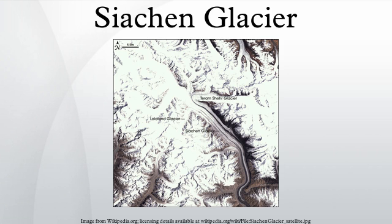Prior to 1984, neither country had any military forces in this area. Aside from the Indian and Pakistani military presence, the glacier region is unpopulated. The nearest civilian settlement is the village of Washi, ten miles downstream from the Indian base camp. The region is also extremely remote with limited road connectivity. On the Indian side, roads go only as far as the military base camp at Zingruma, 72 km from the head of the glacier.